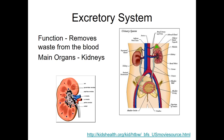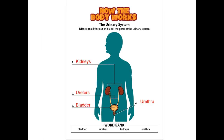The excretory system is made up of several systems, but let's focus on the urinary system: your kidneys, ureters, bladder, and urethra. Your kidneys take waste out of your blood and send it to your bladder as urine. Excretory systems are all systems that get rid of waste — so the digestive, integumentary getting rid of salt, and respiratory getting rid of carbon dioxide are all considered excretory. Here is the urinary system for you to label.